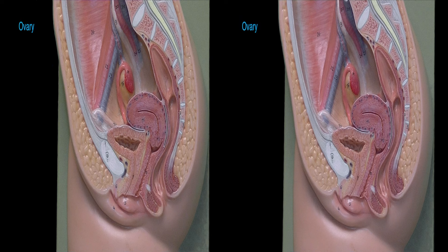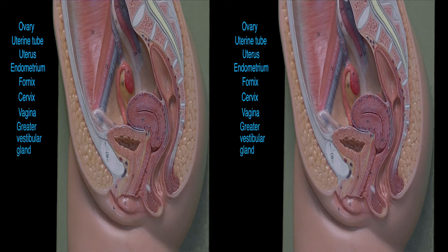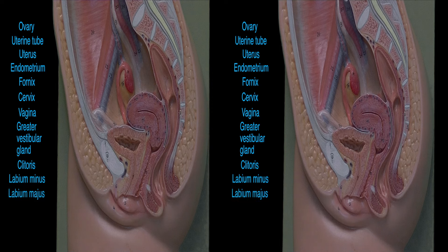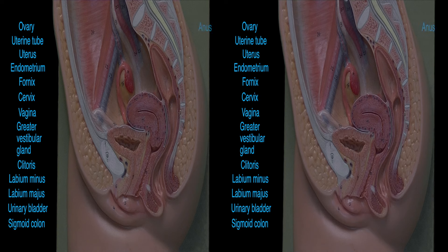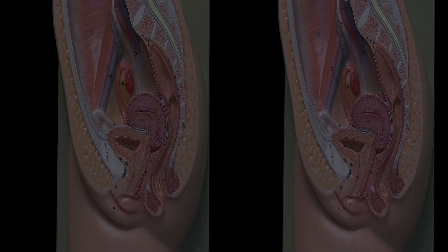Female Reproductive System. Ovary, Uterine Tube, Uterus, Endometrium, Fornix, Cervix, Vagina, Greater Vestibular Gland, Clitoris, Labium Minus, Labia Majora, Urinary Bladder, Sigmoid Colon, Anus, Pubic Symphysis, Urethra.